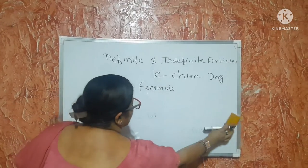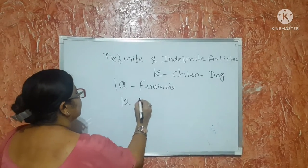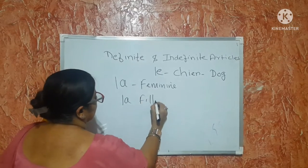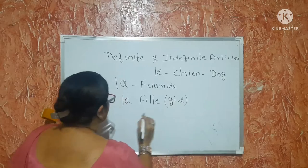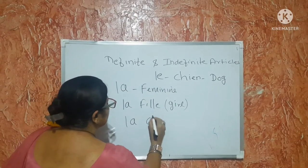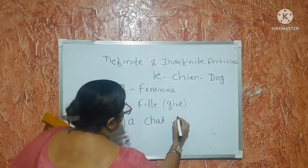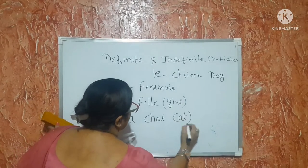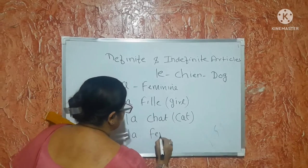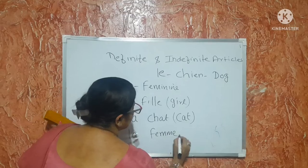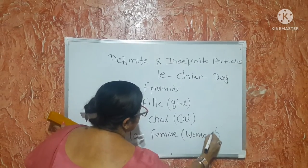La is used with singular feminine nouns. For example, 'la fille' — fille means girl. 'La chatte' — chatte means cat. 'La femme' — femme means woman.